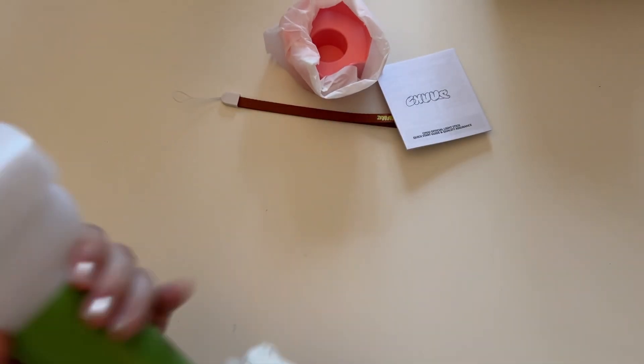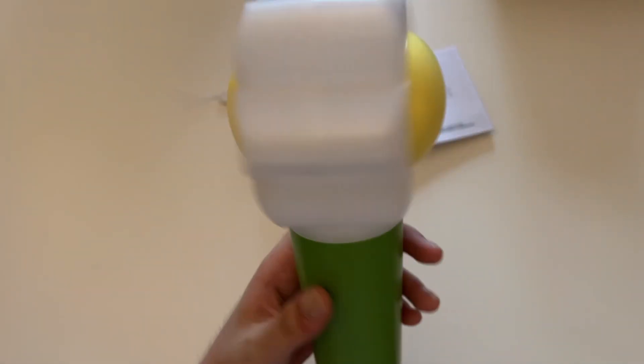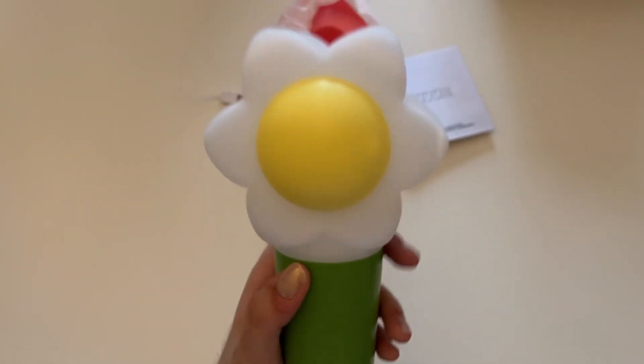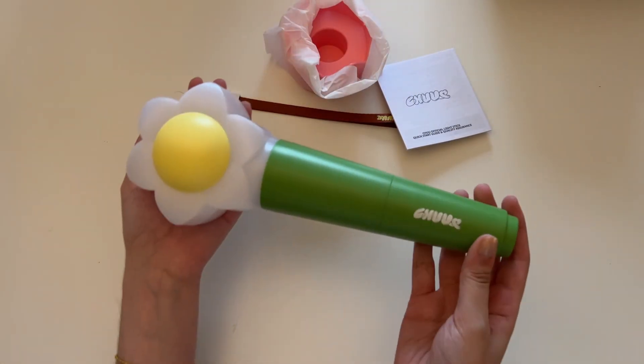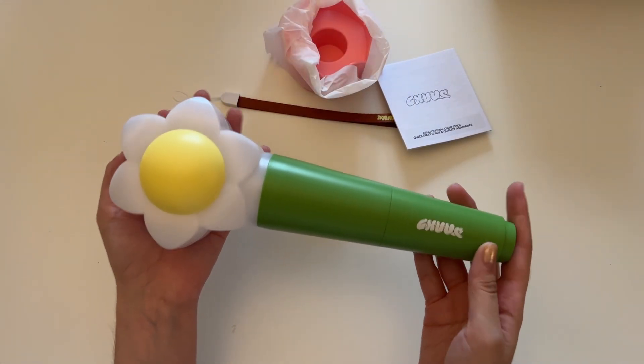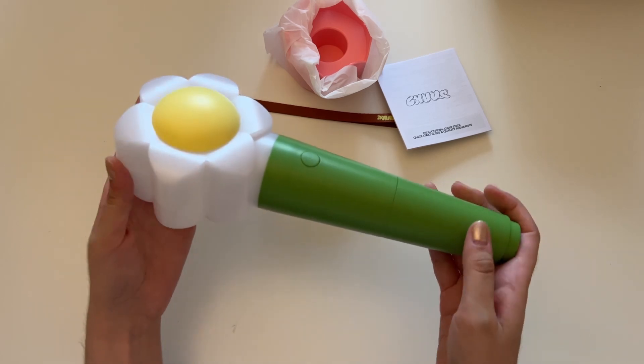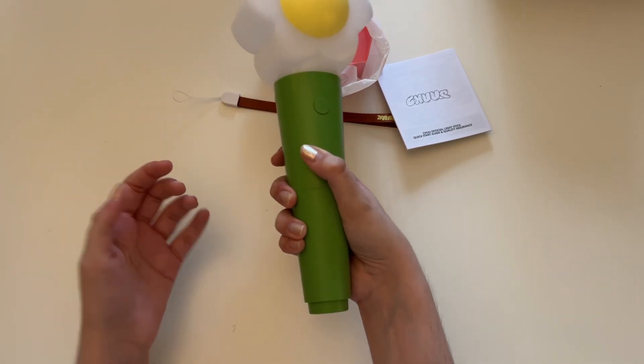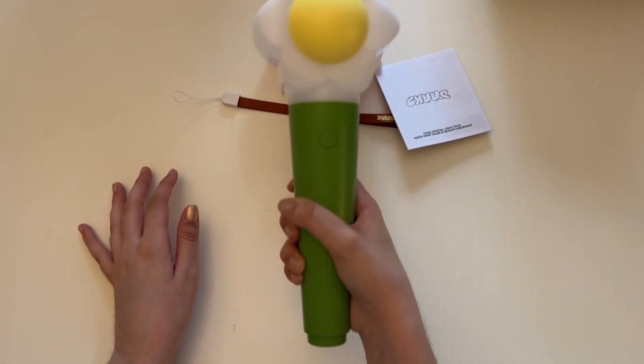Oh. Yeah, I honestly was curious about what the sides look like, because they didn't show the side. They only showed the front and the back. But this is what the whole thing looks like. It says Chuu. And my hand for comparison.